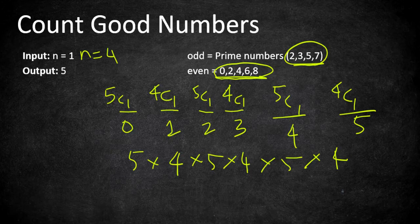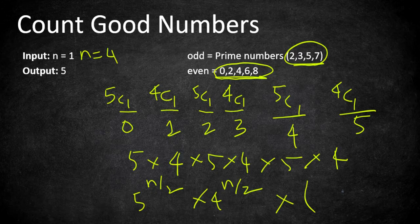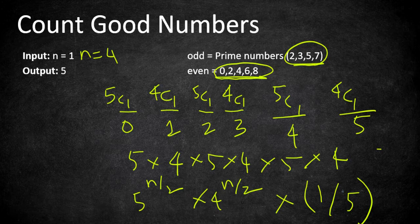This can be represented as 5^(n/2) × 4^(n/2), because out of the total length n, half the positions are even and half are odd — so half contribute a factor of 5 and the other half a factor of 4.